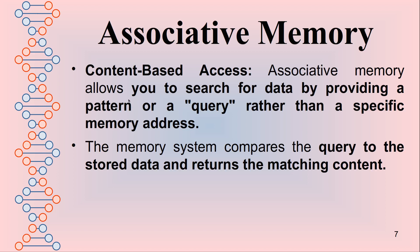The associative memory allows you to search for data by providing a pattern — a query — rather than a specific memory address. For example, nowadays we search content on Google, but that works over the internet. Here, the associative memory finds the content inside the system, not on the internet. The memory system compares the query to the stored data and returns the matching content.